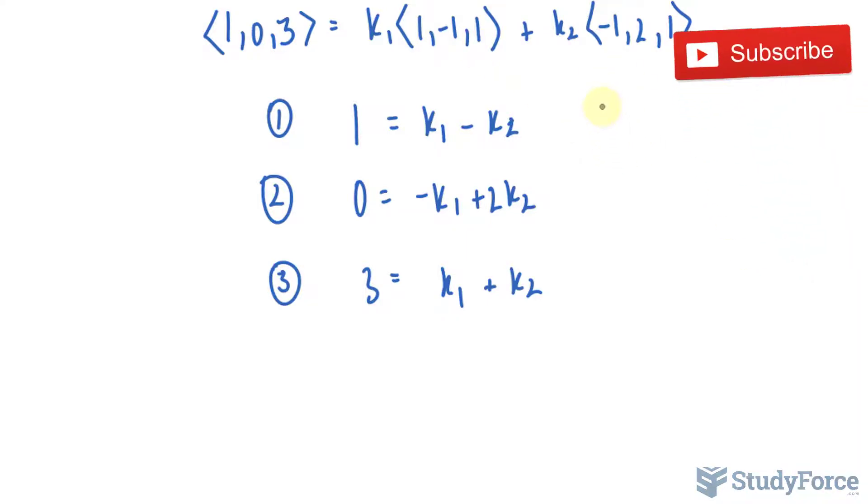Let's write this out in matrix form. The first column will be k₁: (1, -1, 1). The second column in our matrix will be k₂: (-1, 2, 1). And the last column will be the constants: (1, 0, 3).